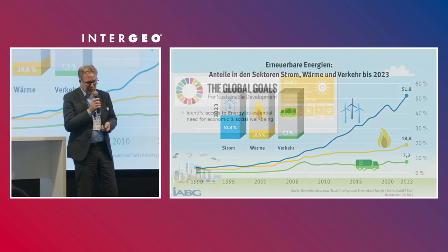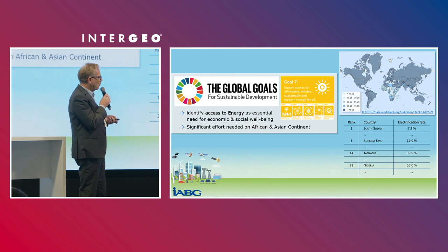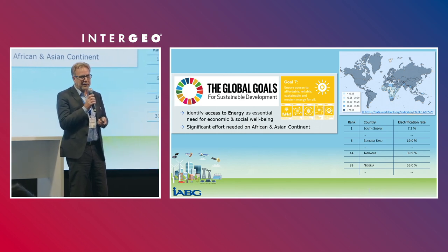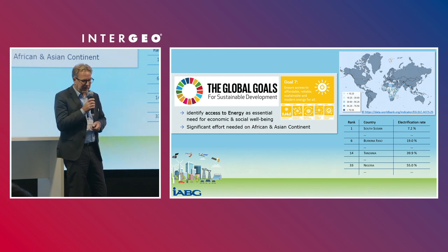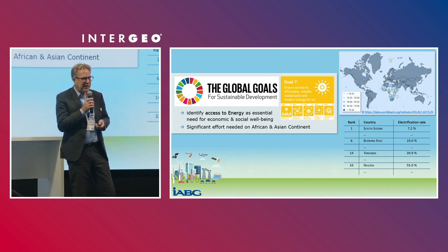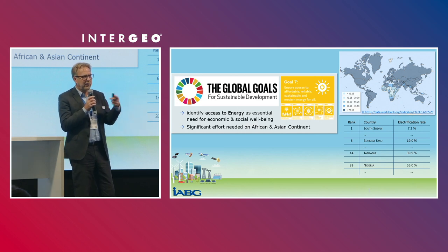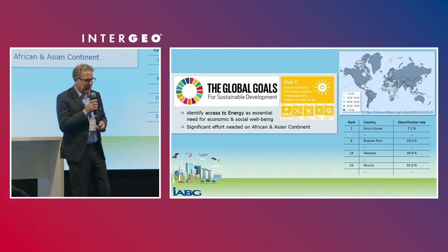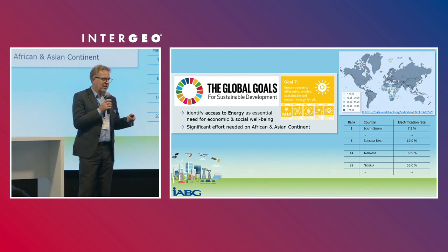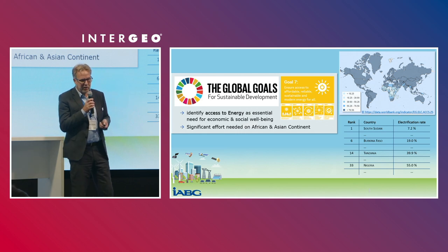I would like to show the first use case we picked up with the World Bank. One important part in urban and rural global development is electrification. For example, in South Sudan only 7.2% are electrified, and in Burkina Faso 90% of villages are not electrified. So there is a high potential to electrify these areas, and the focus should be to implement clean energy sources.